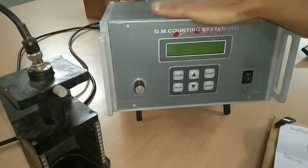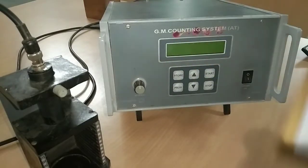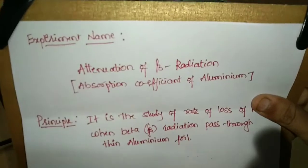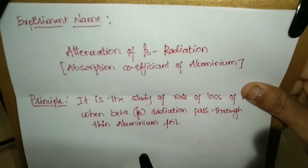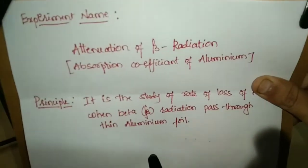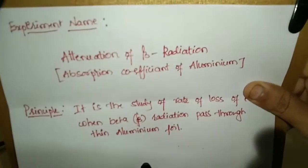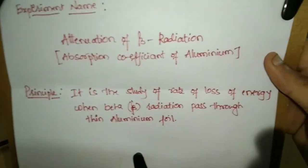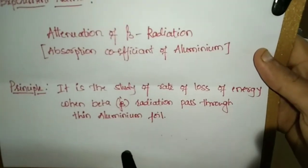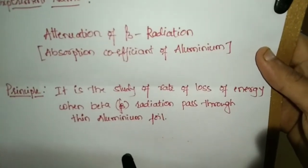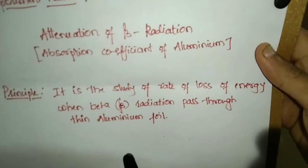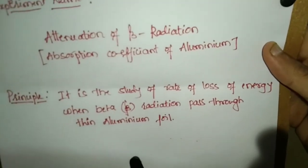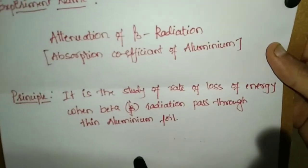What is the experiment name? We are studying the attenuation of beta radiation. The principle is the study of the rate of loss of energy when beta radiation passes through thin aluminium foil.